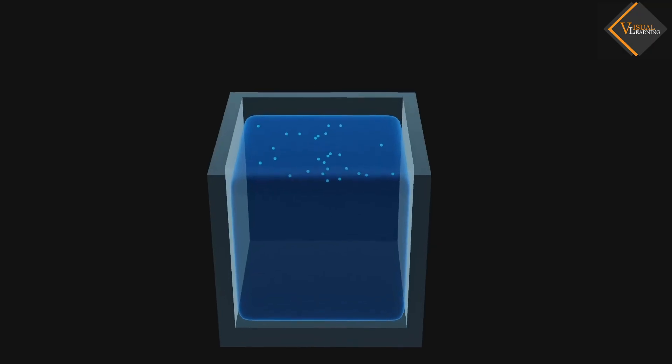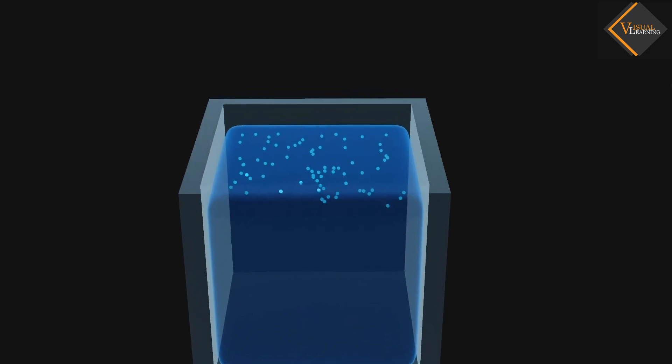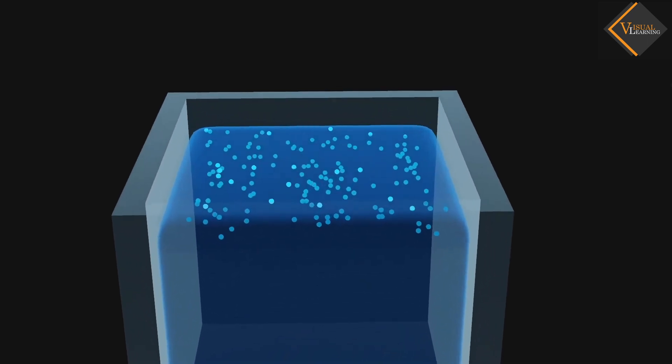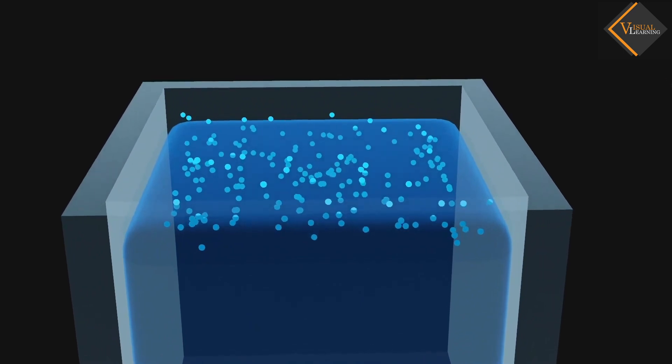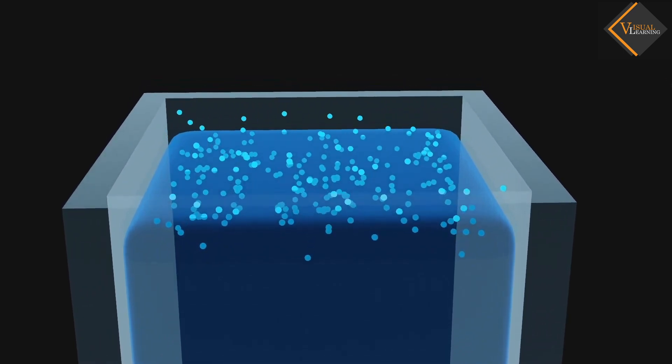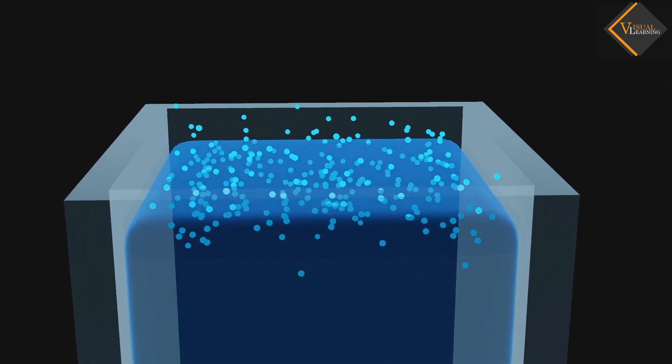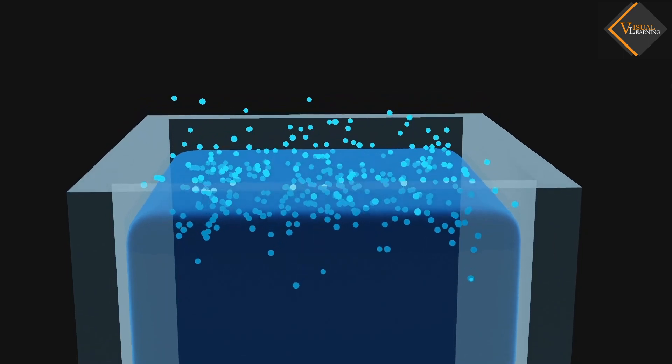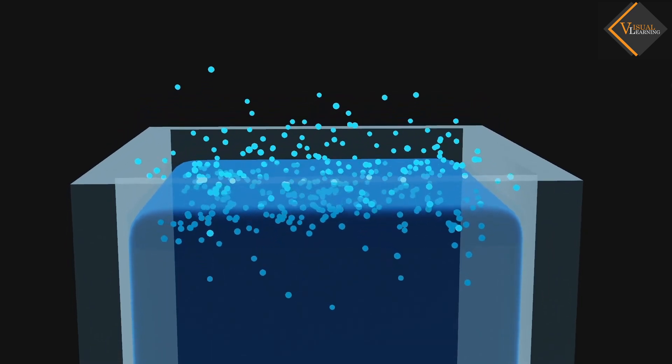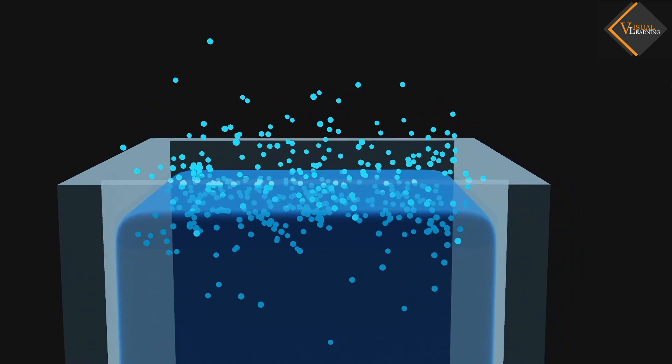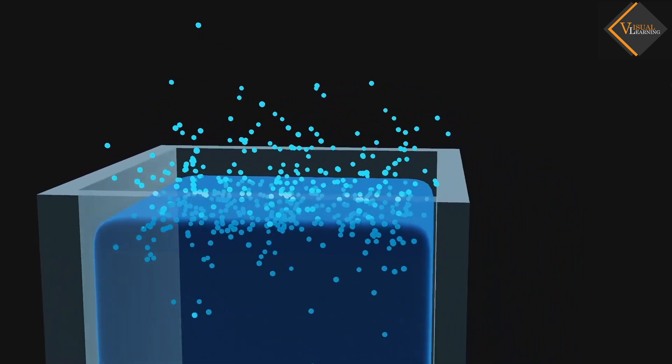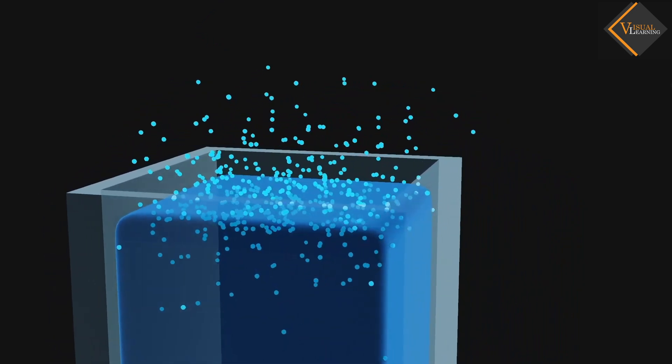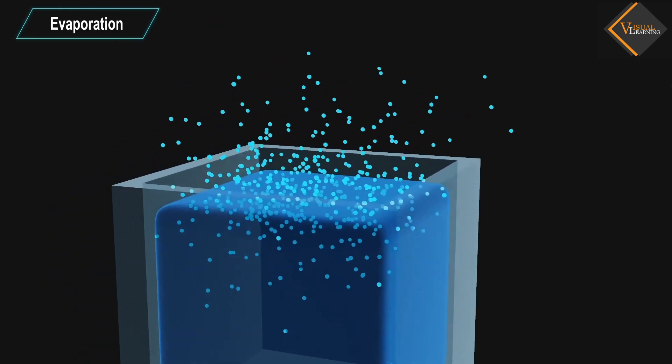In the case of liquids, a small fraction of particles at the surface have higher kinetic energy. This energy is able to break away from the forces of attraction of other particles and gets converted into vapor. This phenomenon of change of a liquid into vapors at any temperature below its boiling point is called evaporation.